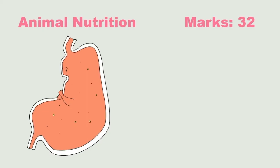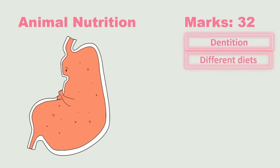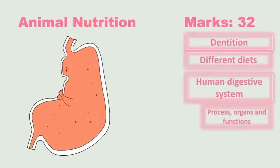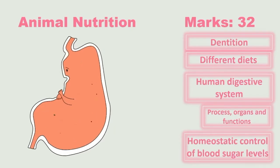We will move over to animal nutrition. This is also a mark allocation of 32. We will look at the dentition of carnivores, herbivores and omnivores, and different diets. We'll look at the human digestive system where we will look at the processes that are involved, the organs and their functions. And then lastly, the homeostatic control of the blood sugar level.